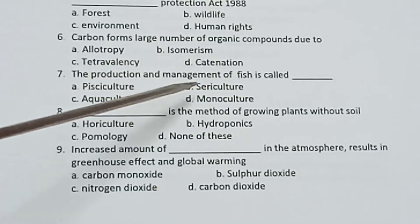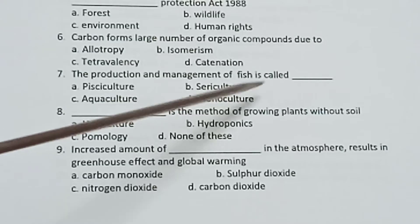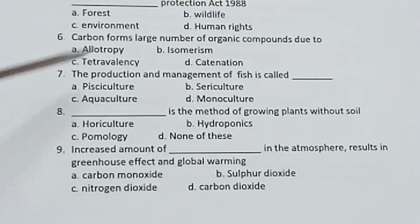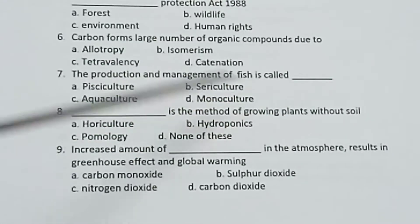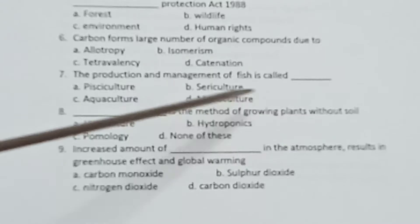Seventh one: The production and management of fish is called dash. Options: Pisciculture, Sericulture, Aquaculture, Monoculture.